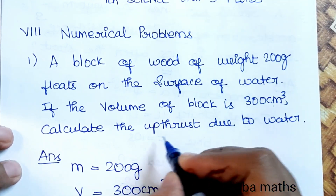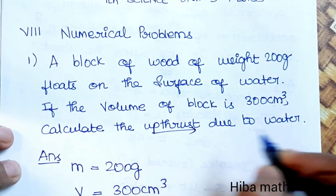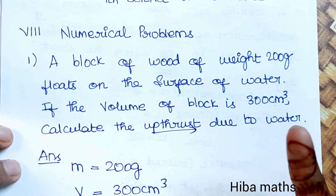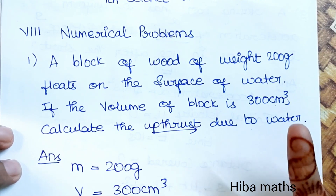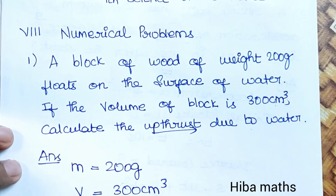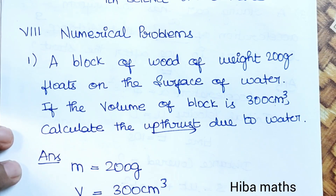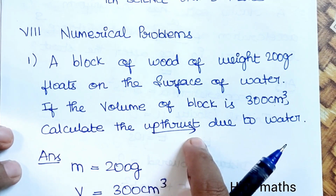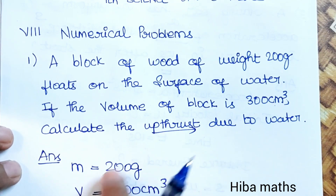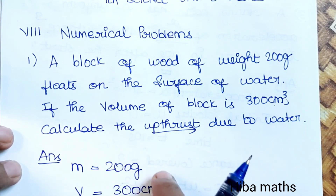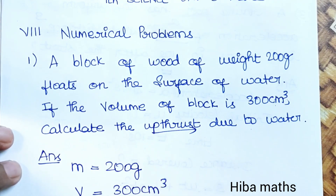The upthrust force is like placing a ball in water — if we push it in, the water pushes back. That's the upthrust force. The weight is equal to the amount of upthrust force when the object is floating.